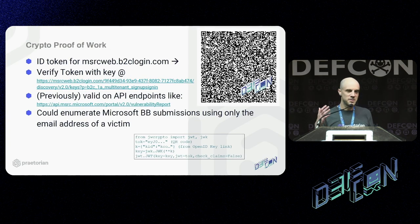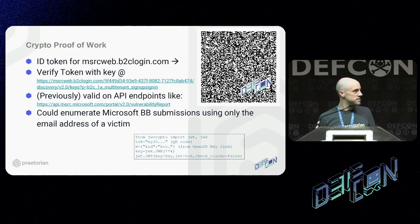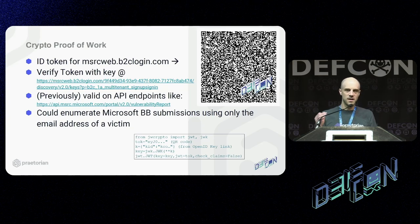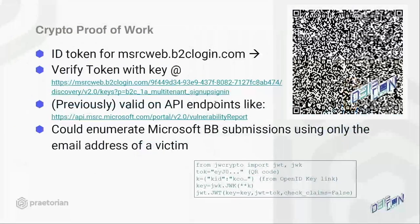I believe that demonstration of security vulnerabilities is really vital for actually getting somebody to fix something. Many CVEs are theoretical, but demonstrating them is key for getting remediation. The neat thing about a crypto vulnerability is that I can prove this is a vulnerability without actually telling you how I did it. I can provide a token — shown in this QR code — which is signed by Microsoft with a key I don't control, but the contents are values I do control. In particular, the email address field in the token is not owned by me. A token like this could be used to enumerate all bug bounty submissions to Microsoft through their web portal, using only the email address of a victim.